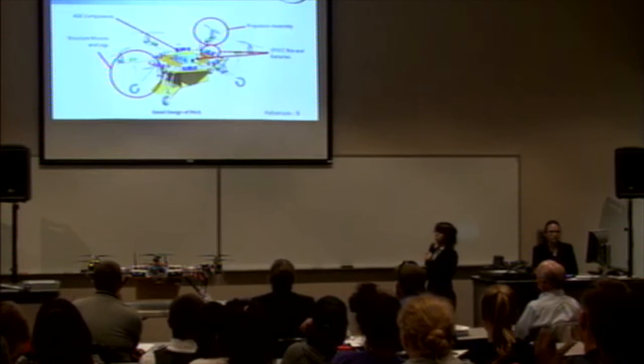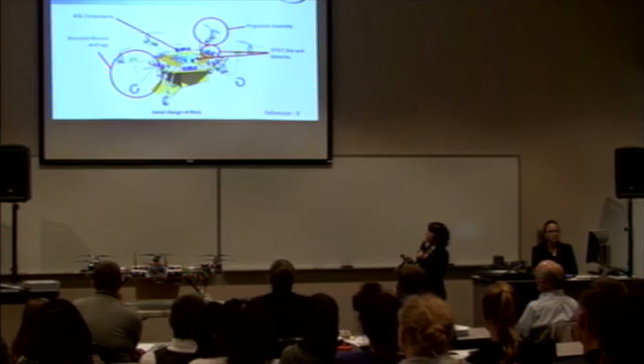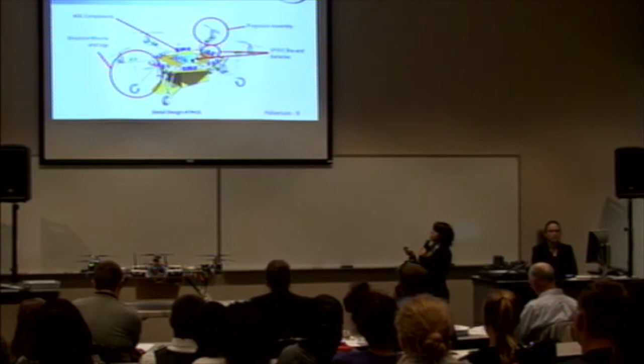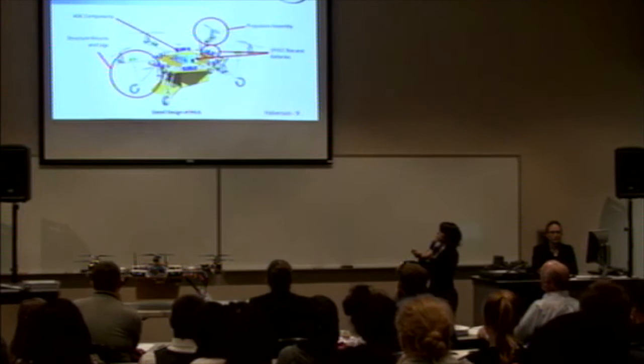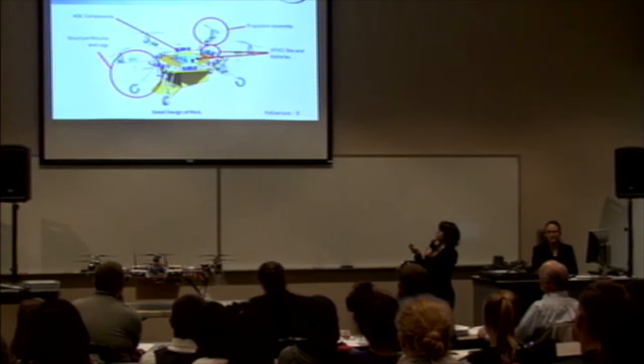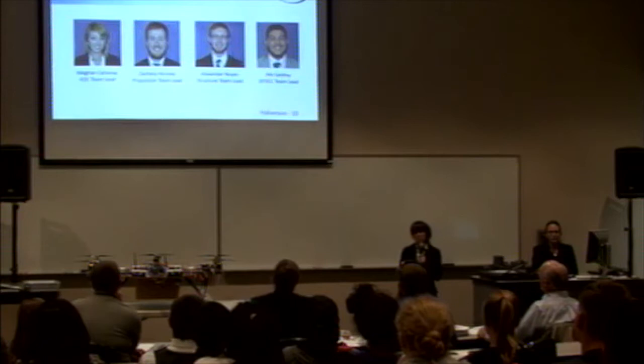Outlining the subsystems of Paul: we had the structure subsystem, responsible for the structure, mounts, and legs that make up the four landing gear assemblies. We also had the attitude determination and control, or ADC subsystem, whose components include the GPS and compass. The propulsion subsystem is responsible for the six propellers and motors. And finally, the software, power, onboard computer, and communication, or SPOC subsystem, responsible for all of the onboard electronics as well as monitoring the six propulsion batteries.